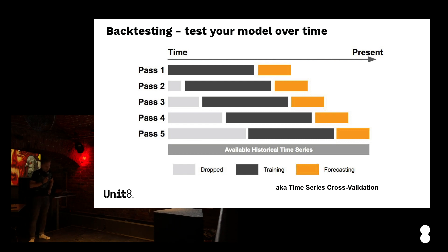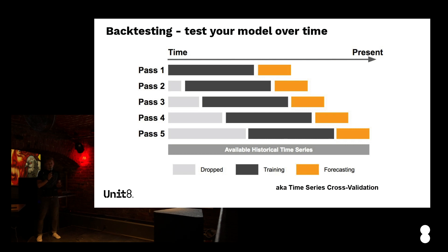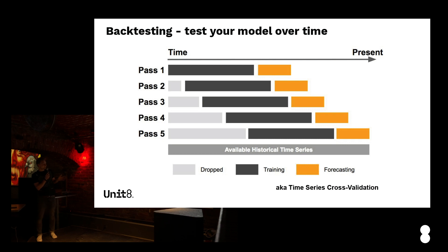When you come up with a model for time series forecasting, you don't want to only find the model that fits best for the last three months of data. You want to test your model over time. Let's say we have the full historical data. We go into the past — everything before some chosen point is treated as a training set, and everything in front is forecasted. To test over time, we do many such passes over the data with a sliding or expanding window of the training set.